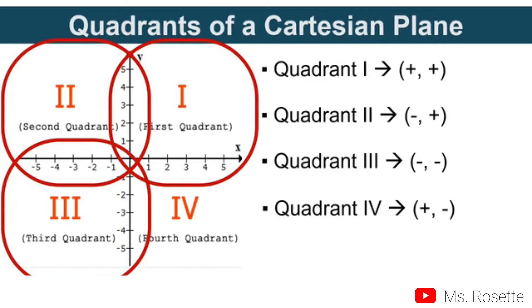Quadrant 4: the value of x must be positive, while the value of y must be negative. This is the part of our quadrant 4.